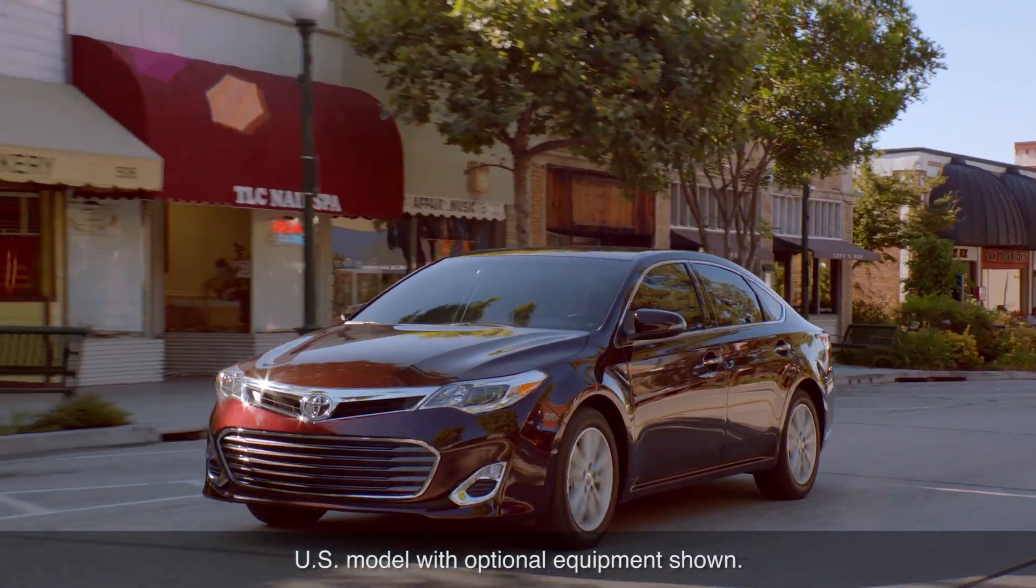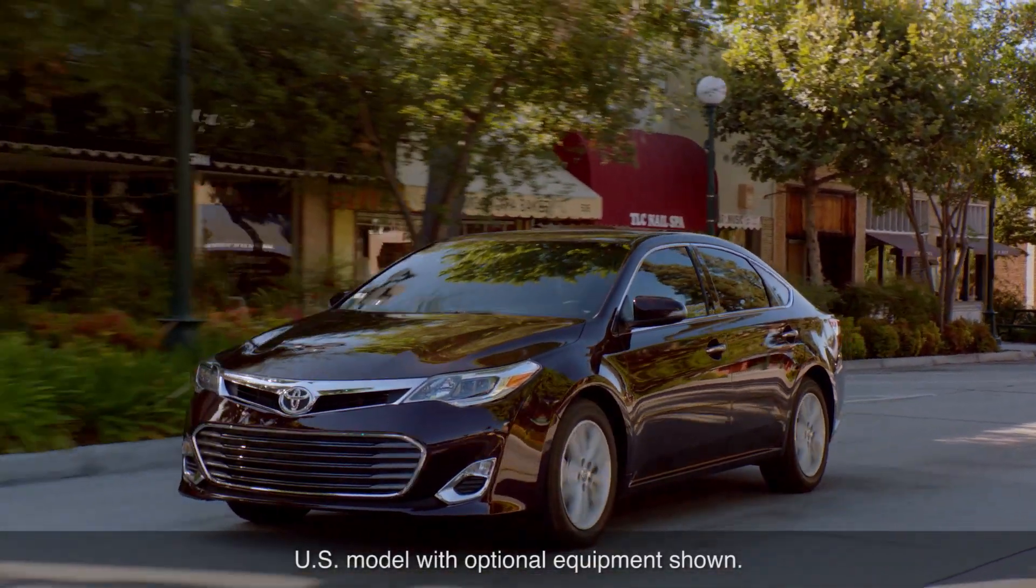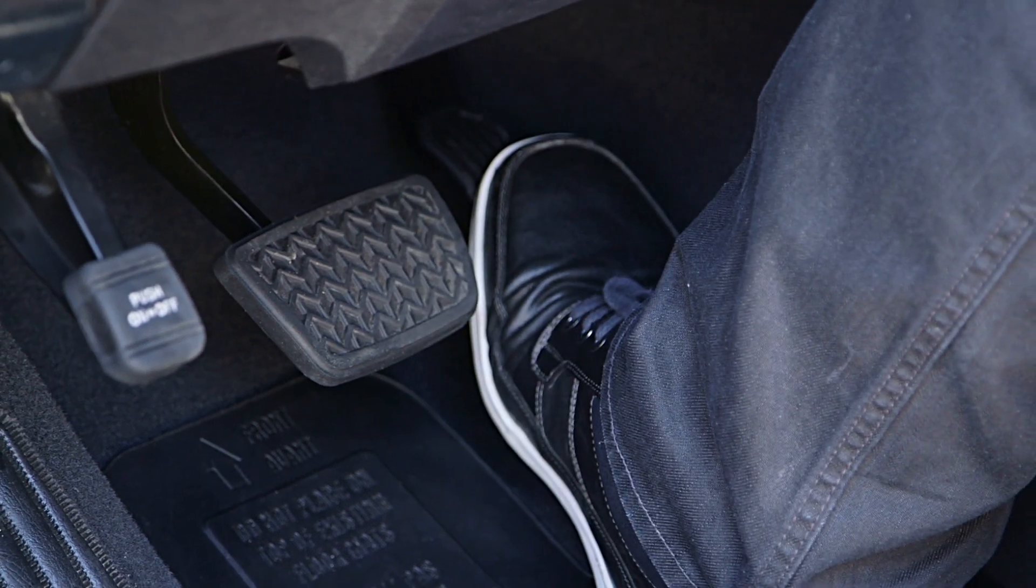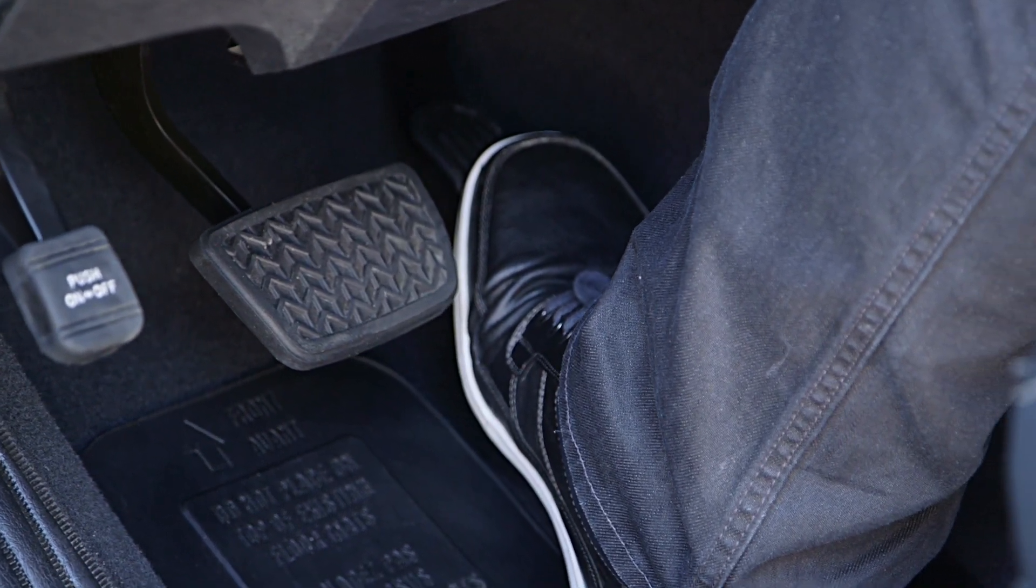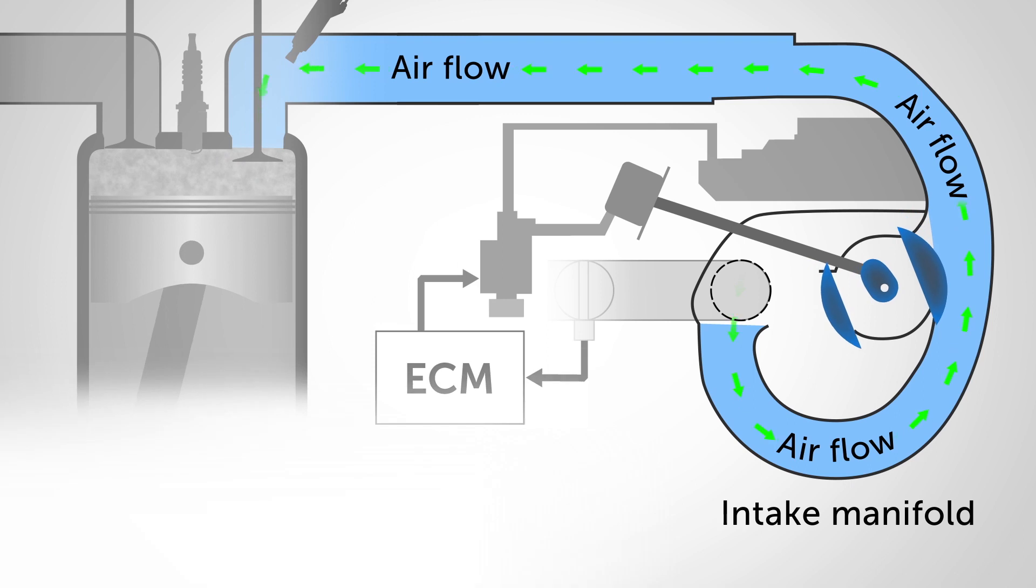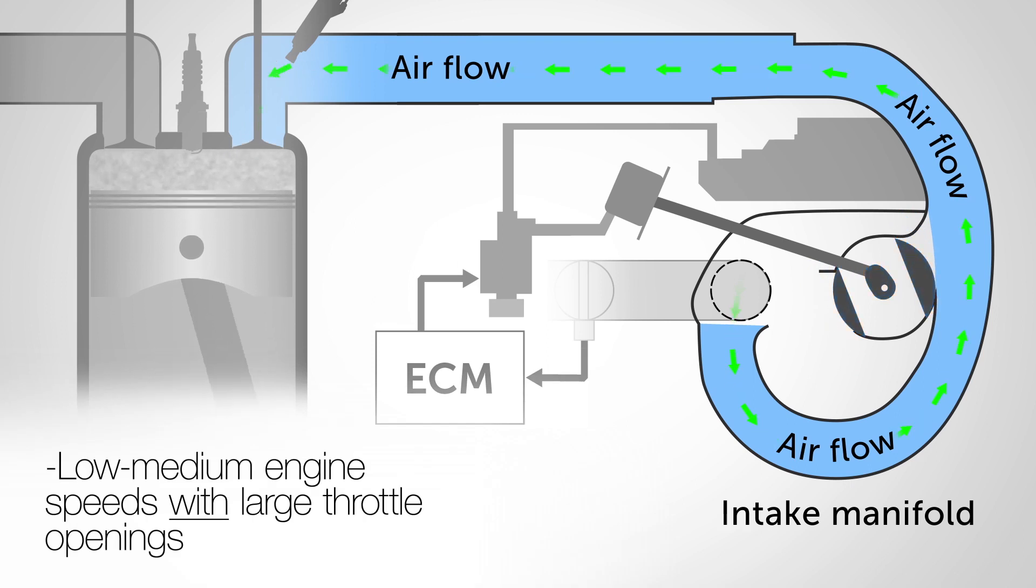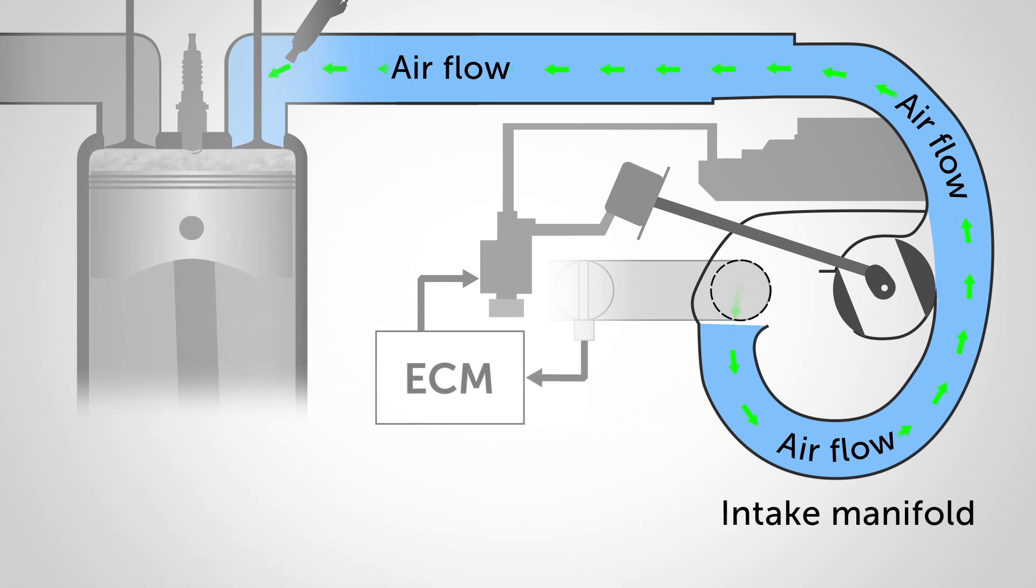At low to medium engine speeds with large throttle openings, as when the accelerator pedal is depressed significantly from a stop for example, the control valve is closed. This effectively increases the length of the airflow path. The greater inertia of the airflow that results helps improve intake efficiency, increasing power output in the low to medium engine speed range.